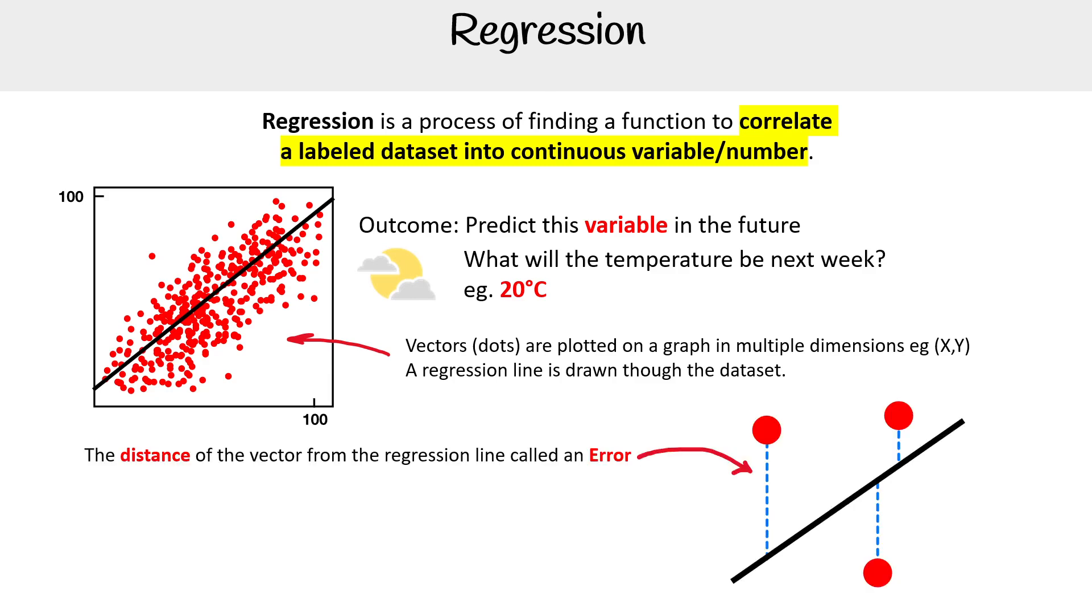So the distance of a vector from the regression line, imagine this dot here to the line, that's what we're going to call an error. The idea is that things that are closer to the line is the prediction and things that are farther away from the line are an error from the line.